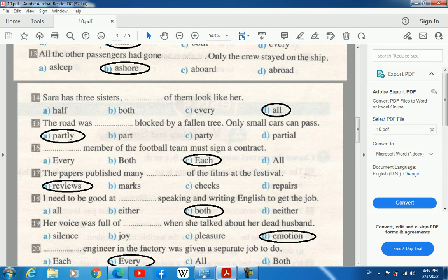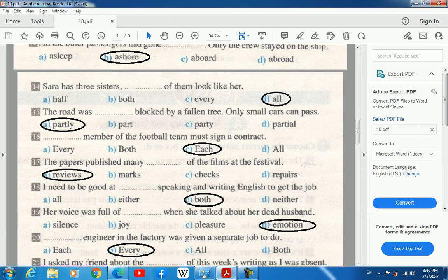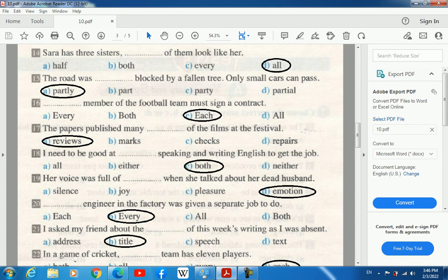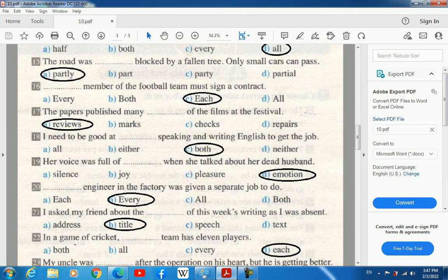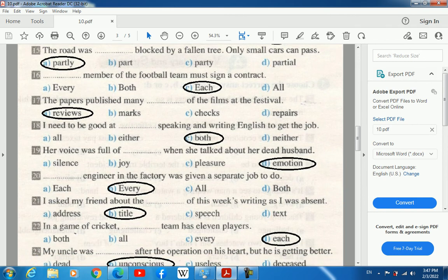13. All the other passengers had gone ashore. Only the crew stayed on the ship. 14. Sara has three sisters. All of them look like her. 15. The road was partially blocked by a fallen tree. Only small cars can pass.